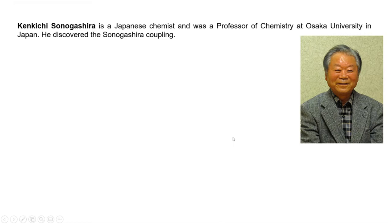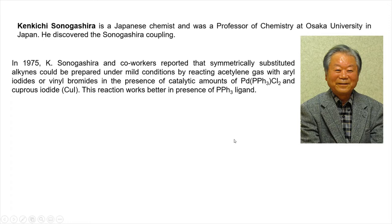So first, what is the Sonogashira coupling reaction? The Japanese scientist Ken-ichi Sonogashira, who was a professor of chemistry at Osaka University in Japan, discovered this Sonogashira coupling reaction, which is widely used in organic research labs for making alkyne-type compounds. In 1975, K. Sonogashira and co-workers reported that symmetrically substituted alkynes could be prepared under mild conditions by reacting acetylene gas with aryl iodides or benzyl bromides in the presence of catalytic amounts of palladium catalyst and cuprous iodide.